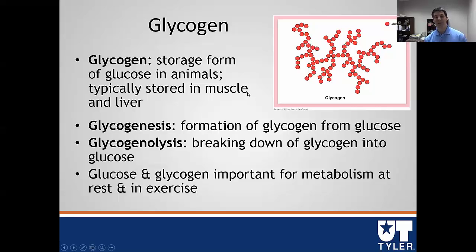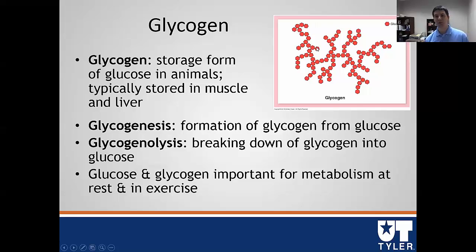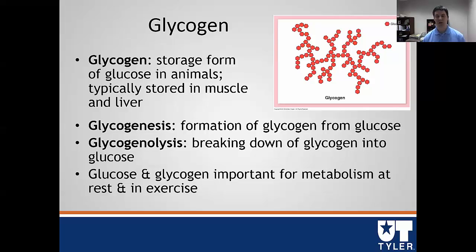In the opposite situation — say after exercising when you drink a Gatorade or eat a meal — when we have excess glucose, we can store it up for later. This process is called glycogenesis, which is the formation of glycogen from glucose, generally to replete the stores we've broken down. So glycogenesis is the making, glycogenolysis is the breakdown. These two processes are important for metabolism during rest and exercise, providing relatively quick ATP production.